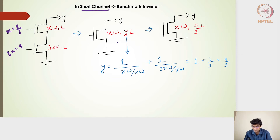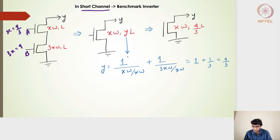We apply the same principle of the sum of reciprocals of relative widths. The relative width of transistor A is xW/xW = 1, and the relative width of transistor B is 3xW/xW = 3. So y equals 1/1 + 1/3, which is 4/3. Therefore y = 4/3 in the short channel model as well.